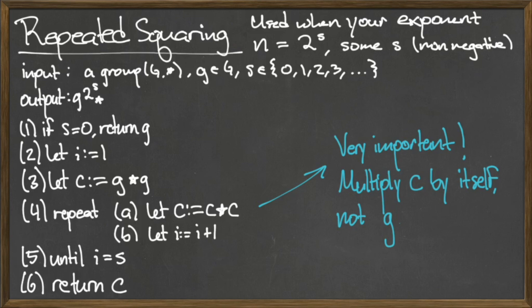Next we enter a loop consisting of two steps. The first is to redefine the variable c and assign it the value of c star c, and the second step is to redefine the variable i and assign it the value i plus 1. We continue to perform these two steps until the stopping condition i equal to s is satisfied, at which point we return the current value of c and our algorithm terminates.